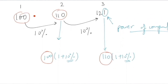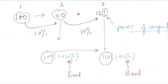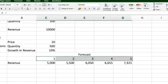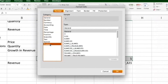This 110 into (1 + 10 percent) moves forward like this — this moves, this moves, no issues, it's perfect. While the growth rate cell is fixed — that is why we used F4 and dollar signs to fix it. You are getting this one rupee on the 10 rupees you got in the second year; the extra 10 rupees you earned, you are getting an extra one rupee on that — that is compounding.